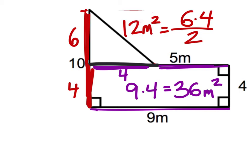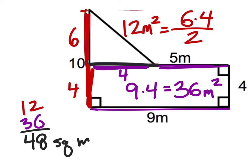So when I find the area, I just take my 12 and add it to my 36, and I find that my area is 48 square meters. Thank you.